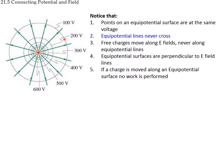If we move a charge from one point to another point on the same equipotential surface, we wouldn't be doing any work, because the electric field is radially outward, the force is radially outward, and we are moving at 90 degrees with respect to that force — so no work is done.